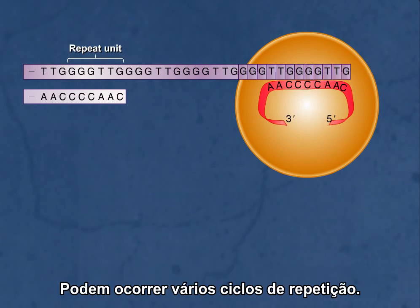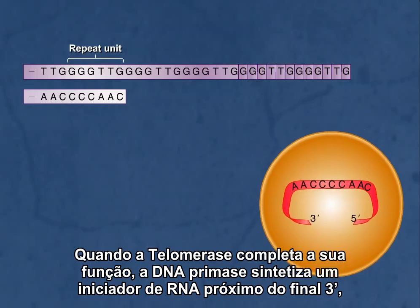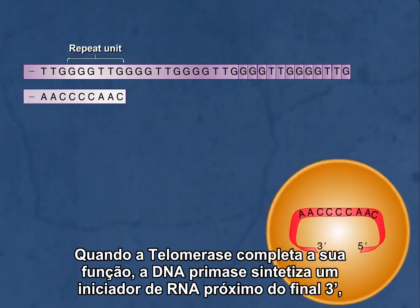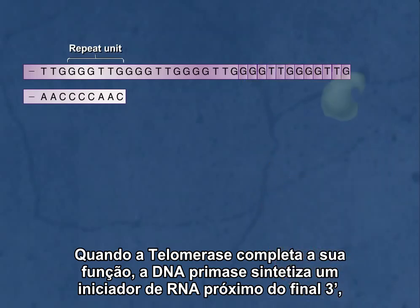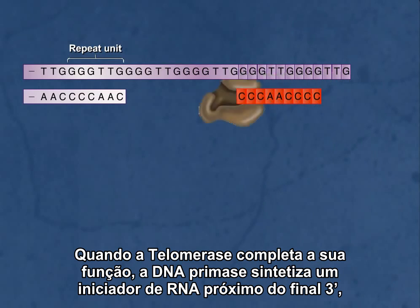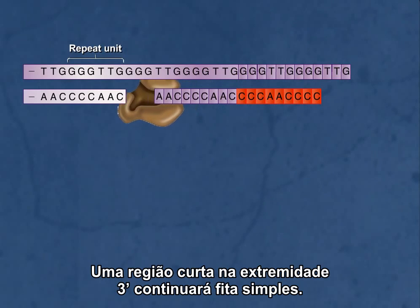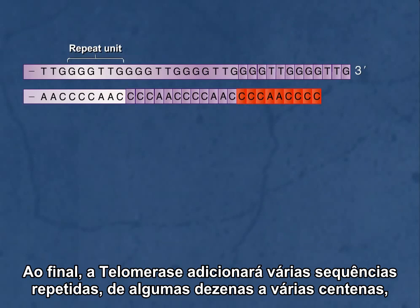Many cycles of repeats can occur. Once telomerase has completed its function, DNA primase synthesizes an RNA primer near the 3' end, and DNA polymerase fills in the vacant region. A short region at the 3' end will remain single-stranded.